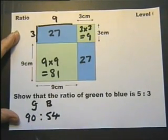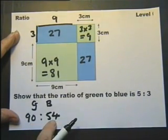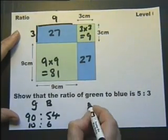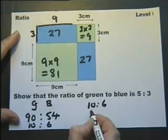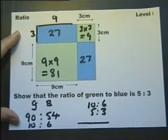Now ratios we can cancel just the same as we can fractions. So let's divide this by 9 and divide this by 9. That will give us 10 to 6. And 10 to 6 will then cancel as 5 to 3. Doesn't mention showing you're working out, but quite obviously the only way we can show is to show the working out.